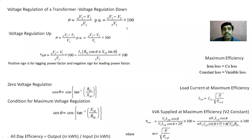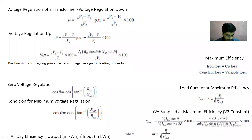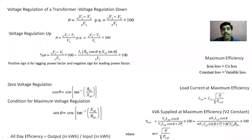Coming to the voltage regulation, there is regulation down or regulation up. If there is regulation down, it is: (no-load voltage − full-load voltage) / no-load voltage × 100 in percentage. Regulation means when a load at a particular power factor is thrown off. If it is regulation up: (no-load voltage − full-load voltage) / full-load voltage × 100. We can also write this in terms of (I2·R02·cosθ ± I2·X02·sinθ) / V02. From this, we can calculate regulation for both lagging and leading power factors — for lagging it is plus, for leading it is minus.